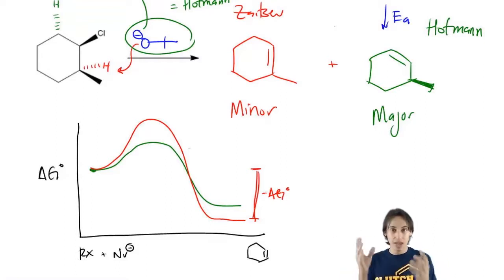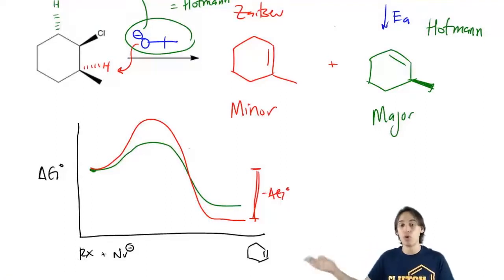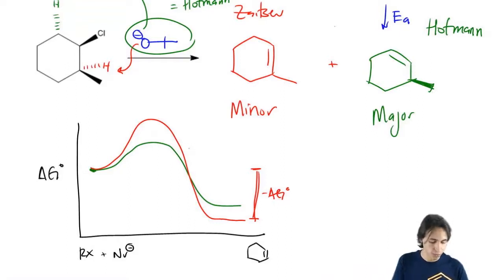Overall, my product for the red, for the Zaitsev product, is going to be more stable at the end. I'm going to gain more delta G or more free energy by going in that direction than by going in this direction.